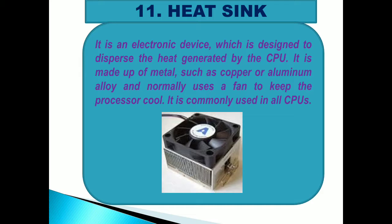The next hardware is the Heat Sink. It is an electronic device designed to disperse the heat generated by the CPU. It is made up of metal such as copper or aluminum alloy and normally uses a fan to keep the processor cool. It is installed over the processor, and whenever the processor gets heated, the heat sink releases the heat.